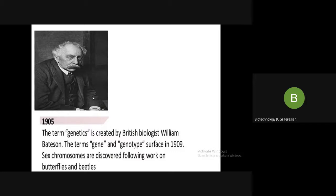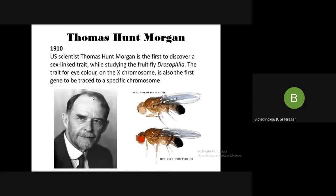In 1905, the term genetics was coined by British biologist William Bateson. The terms gene and genotype came into use in 1909. In 1910, US scientist Thomas Hunt Morgan discovered sex-linked traits while studying the fruit fly Drosophila. The wild variety of Drosophila were red-eyed, whereas some were white-eyed — a mutation that occurred on the X chromosome. This was the first time it was discovered that the sex chromosome was related to a trait.